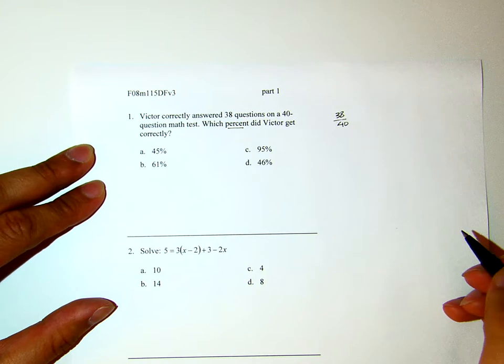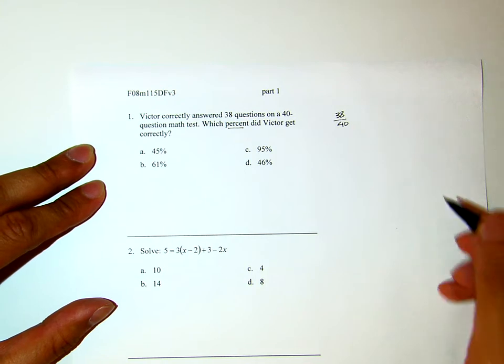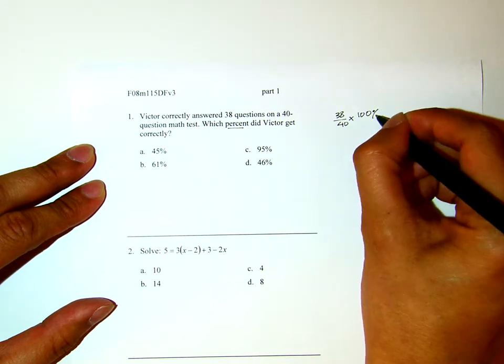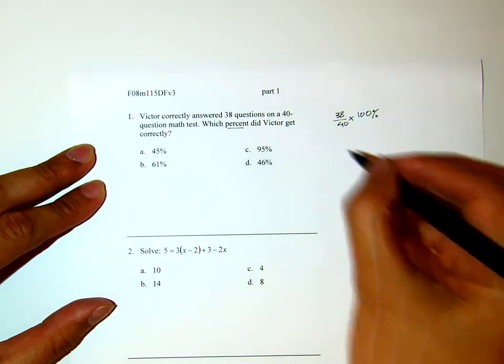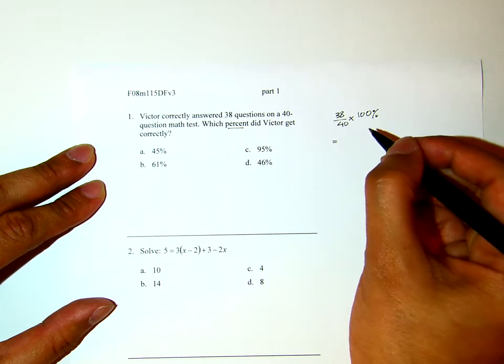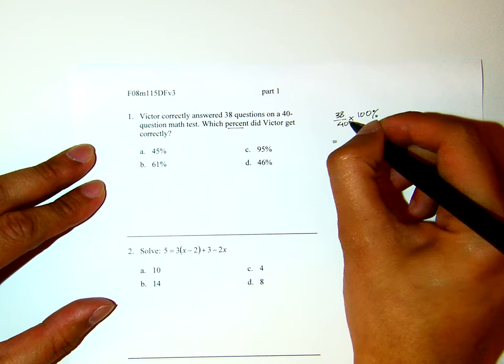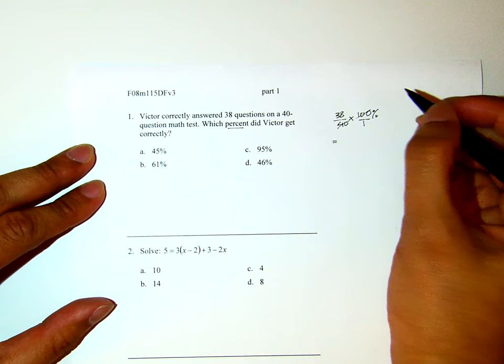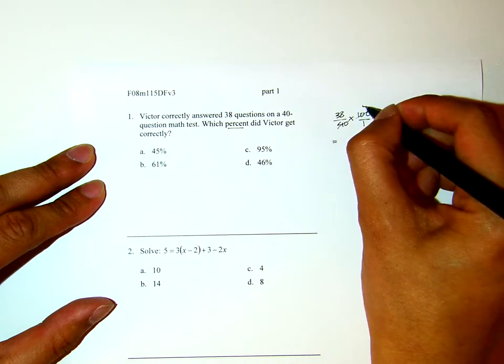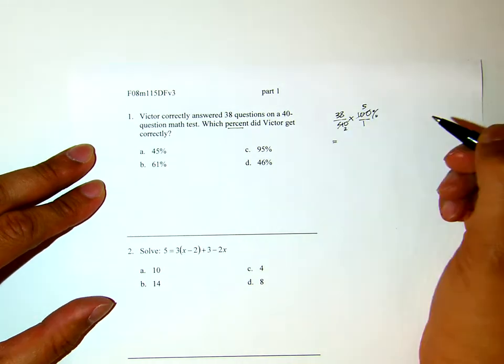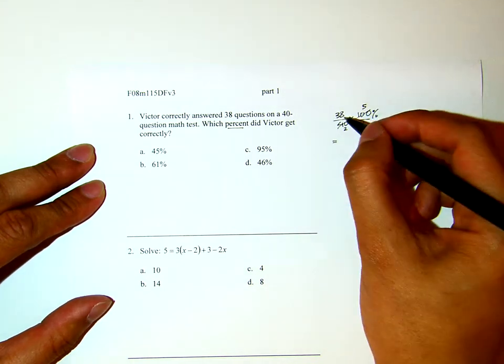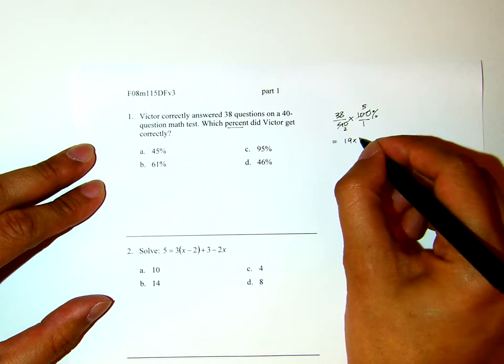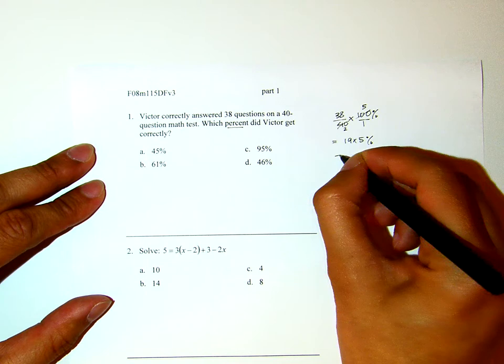So basically what I need to do now to convert this fraction to percent by multiplying by 100 percent. And then from here, I will multiply this fraction by 100. I can cross-cancel by 20. This is 5 and this is 2. Now I have 38 divided by 2 is 19 times 5 percent or 95 percent.